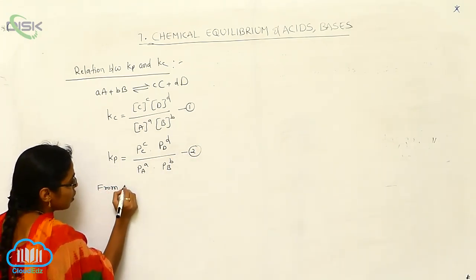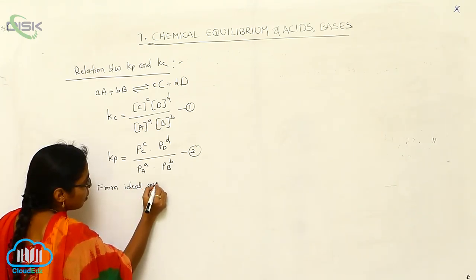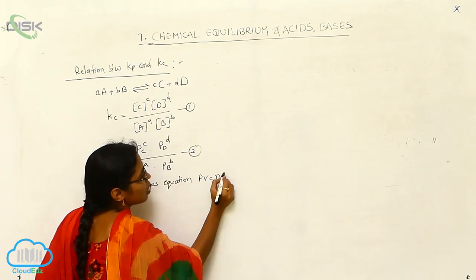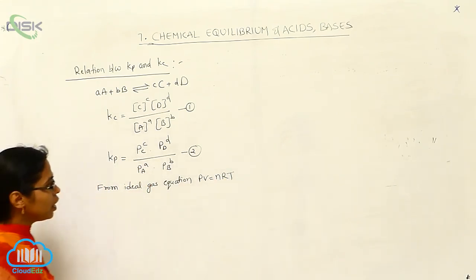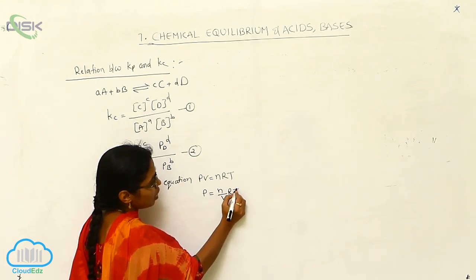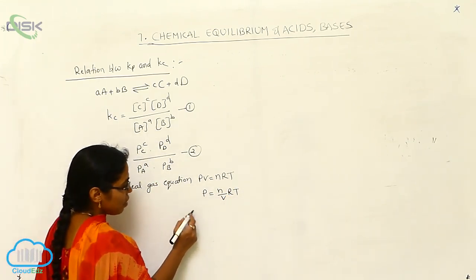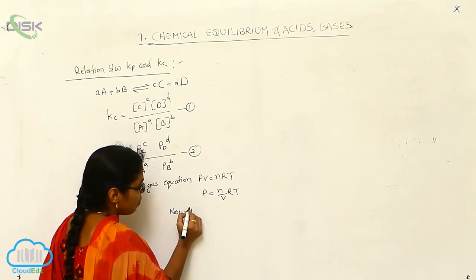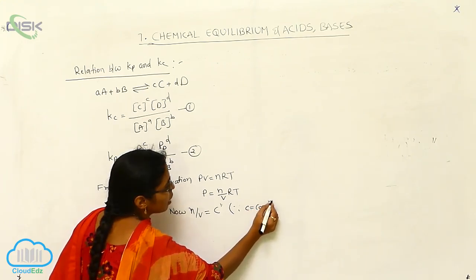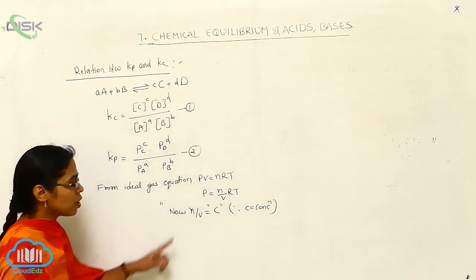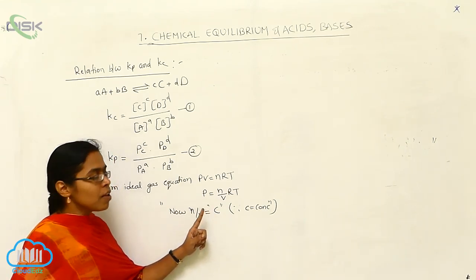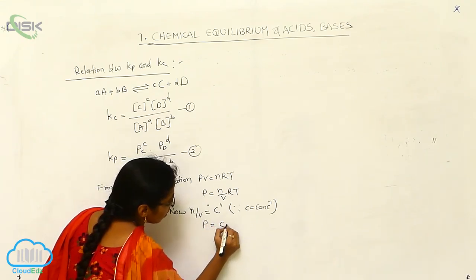From the ideal gas equation: PV = nRT. I want to take the volume to the right side, so P = (n/V) RT. In place of n/V, we can write C, where C means concentration — the number of moles per volume is nothing but concentration, expressed as C. So our equation converts to P = CRT.